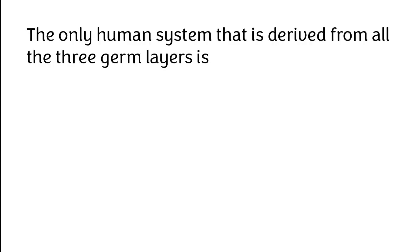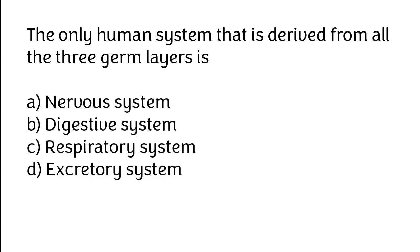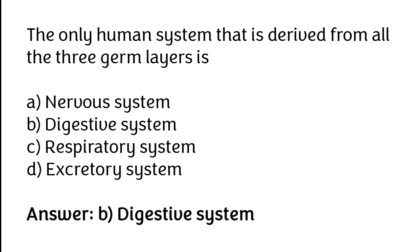The only human system that is derived from all three germ layers is: A) Nervous system, B) Digestive system, C) Respiratory system, D) Excretory system. The correct answer is option B — digestive system.